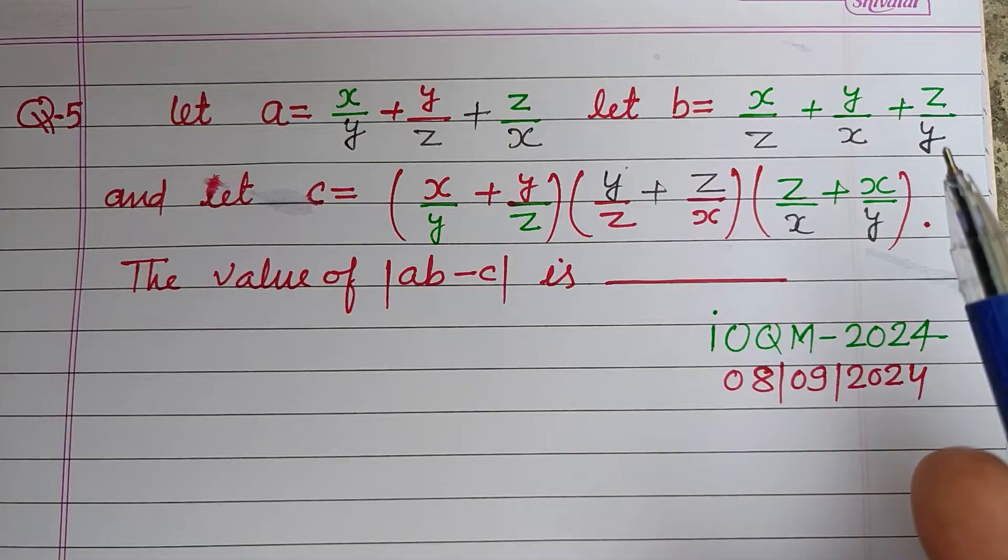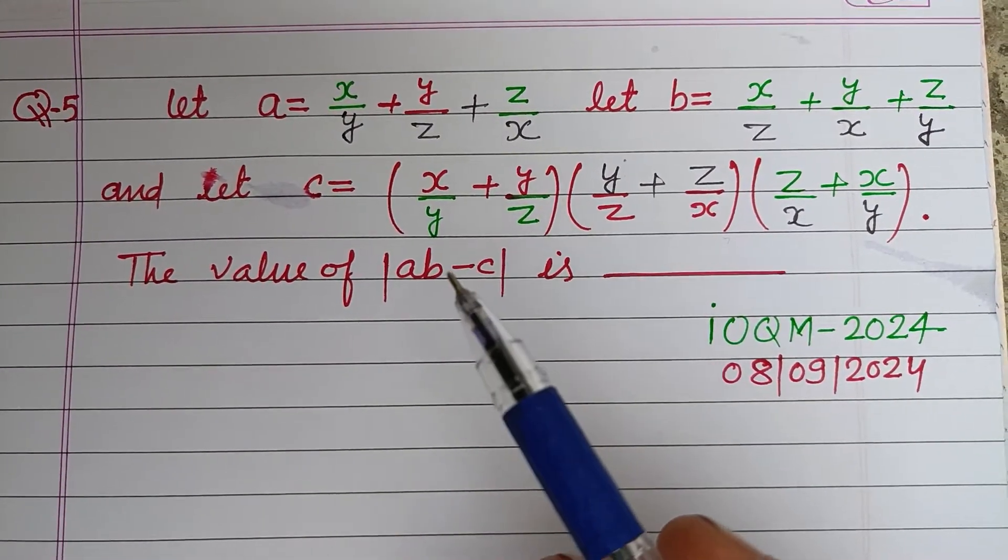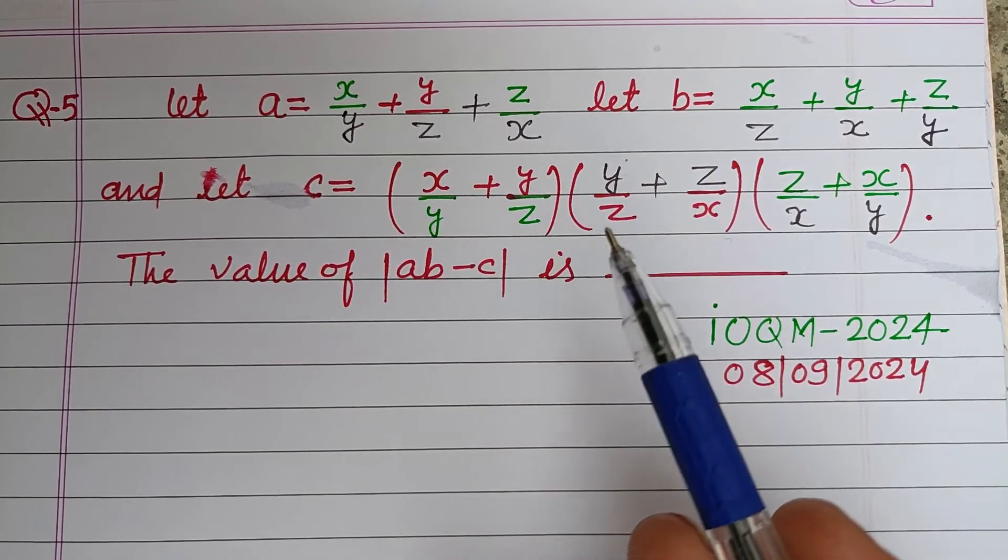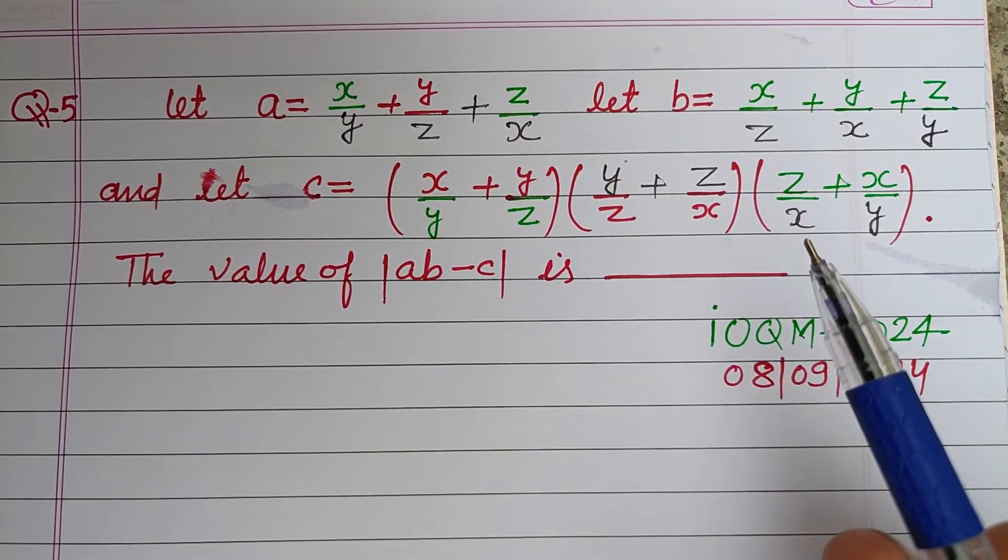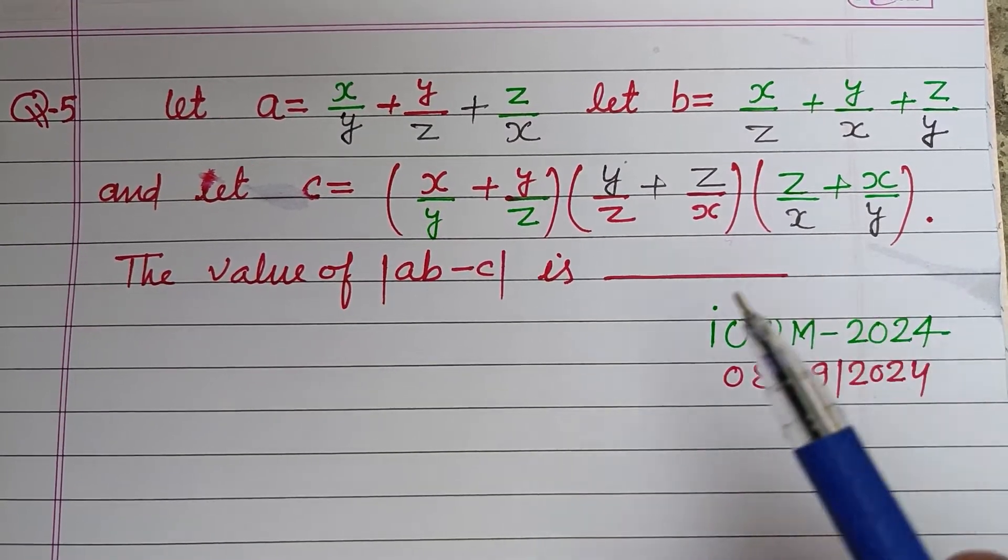And c is given to x over y plus y over z into y over z plus z over x into z over x plus x over y.